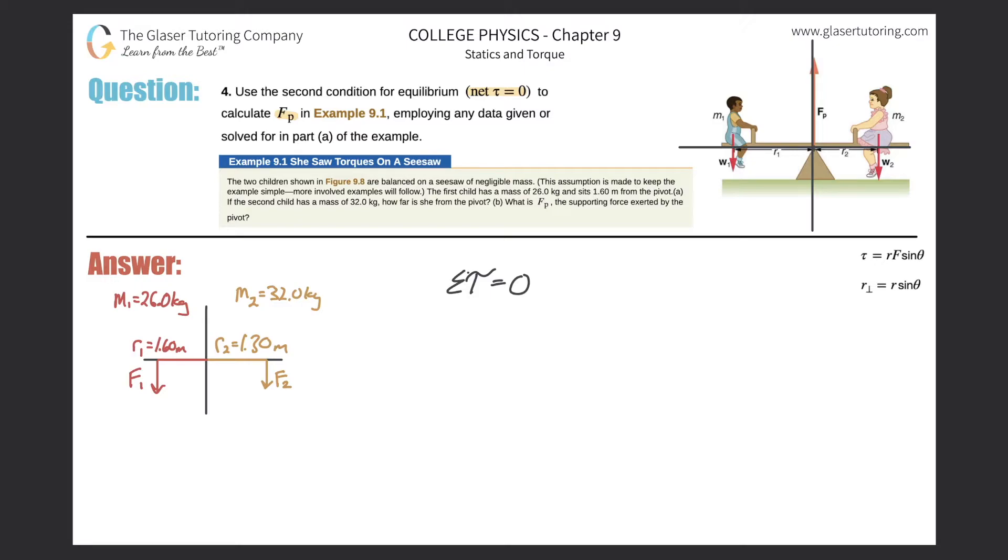There's one torque here with a certain force at a certain distance from the axis of rotation, and then there's a second torque produced by this force over this distance from the axis of rotation. So therefore, I could say that torque one plus torque two will equal zero.